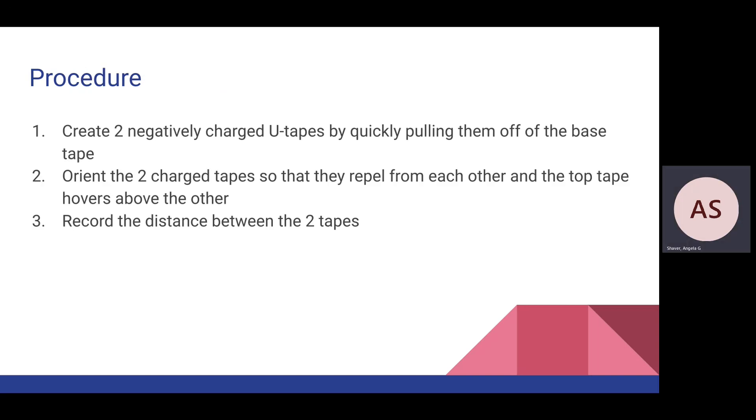The procedure for this lab was the same as Lab 1. We started by creating two negatively charged U-tapes by quickly pulling them off the base tape. Next, we oriented them so they would repel from each other, allowing the top piece to hover above the other. Finally, we recorded the distance between the two pieces of tape.